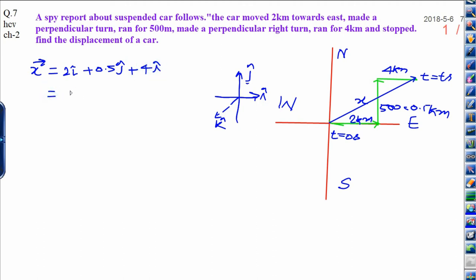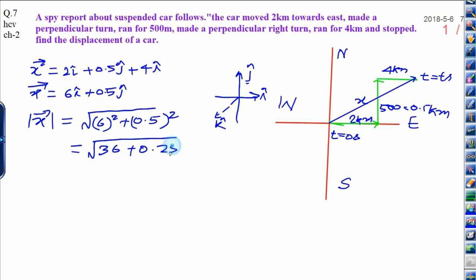And when you solve it, it will be 4 plus 2, 6i plus 0.5J. This is the value of x vector. Now, if you want to calculate the magnitude of this space vector, it will be under root of 6 square plus 0.5 square. And it will be 36 plus 0.25. Finally, you can write 36.25, and you solve it approximately 6.02 km is the displacement.